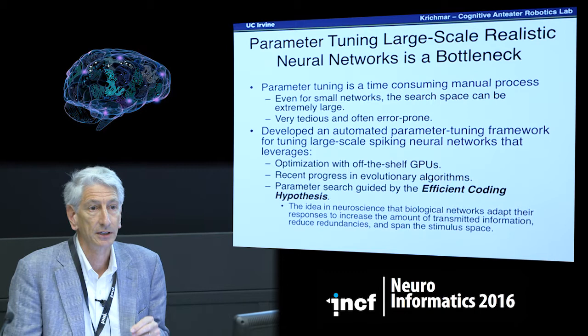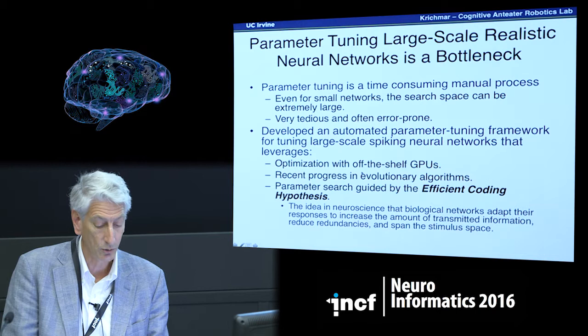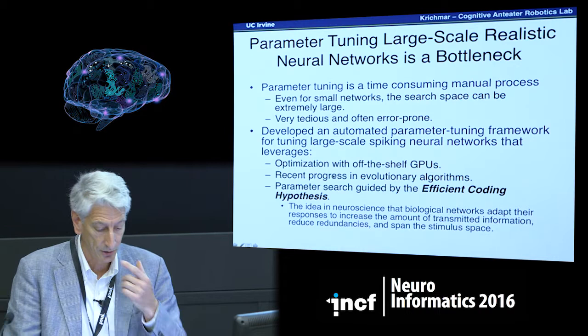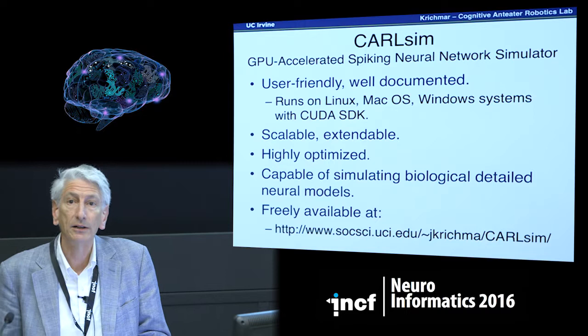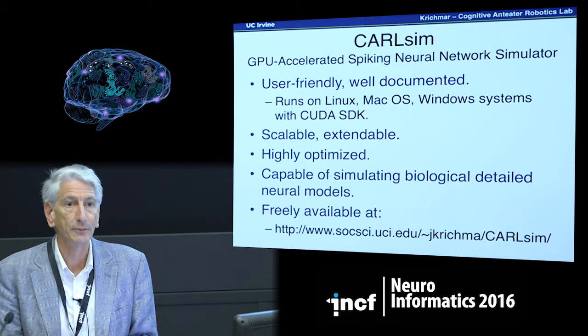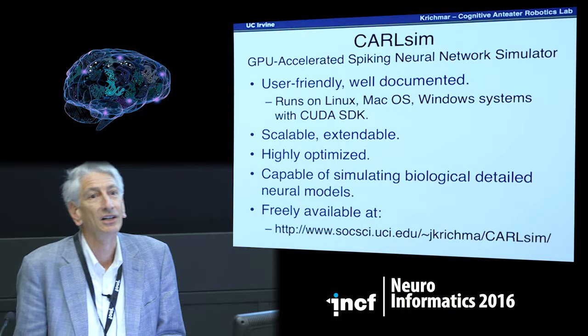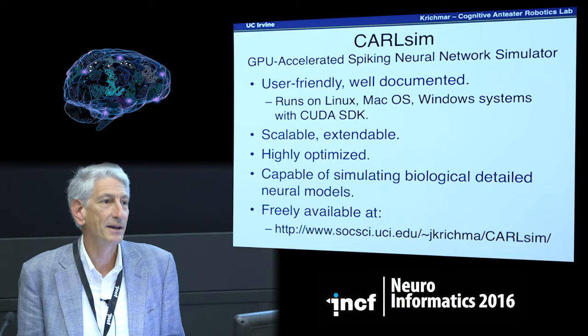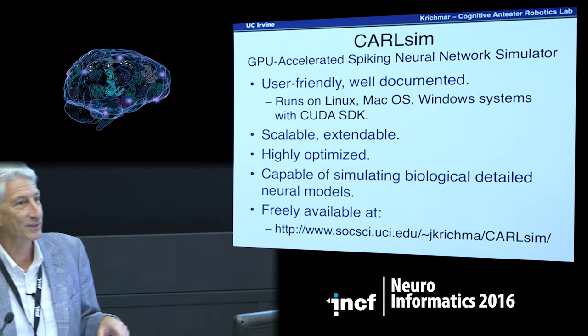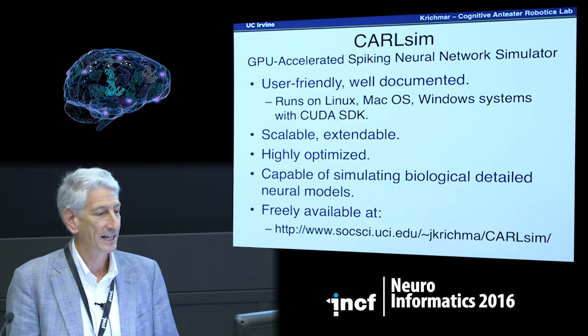One key guiding principle is using theoretical work, like the efficient coding hypothesis, to actually guide this parameter search. That parameter tuning framework is part of a larger software framework that we call CarlSim. The name of our lab is CARL — UC Irvine's mascot is the anteater, which makes for a nice acronym: Cognitive Anteater Robotics Laboratory. So our robots are called CARL and our simulator is called CarlSim.